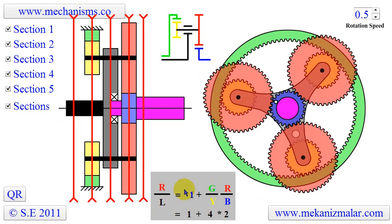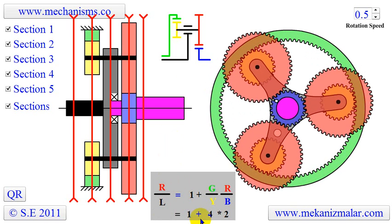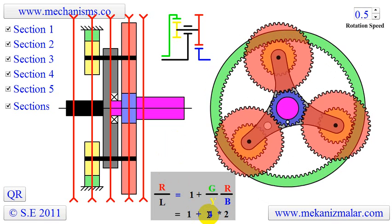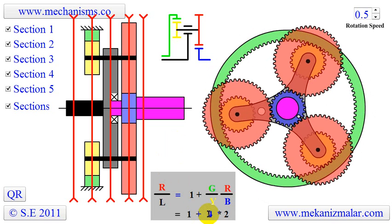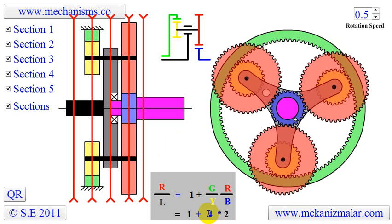If we substitute the previously given teeth numbers, 96, 24, 48, and 24, into the equation given, we come up with a speed ratio of 9.